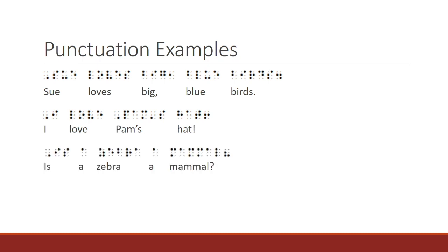The third sentence is: Is a zebra a mammal? This sentence begins with a capital indicator, as all sentences would, and ends with the question mark.